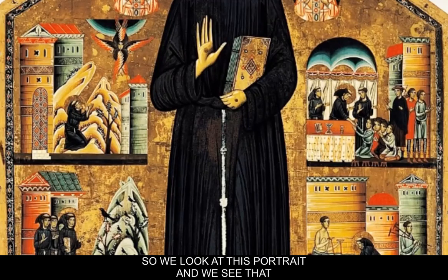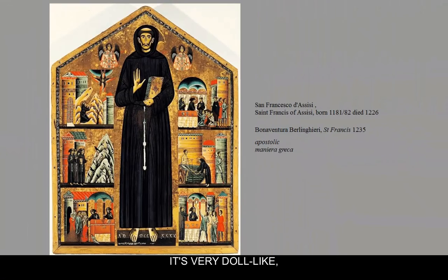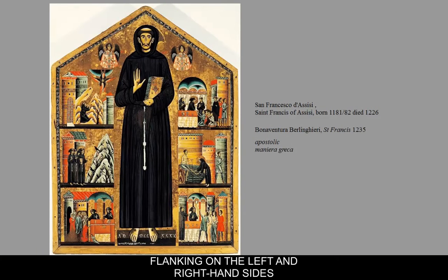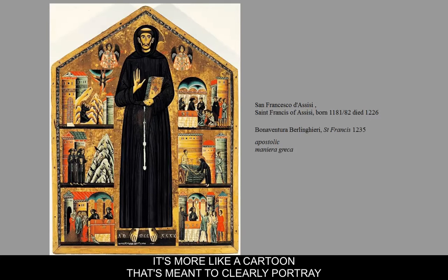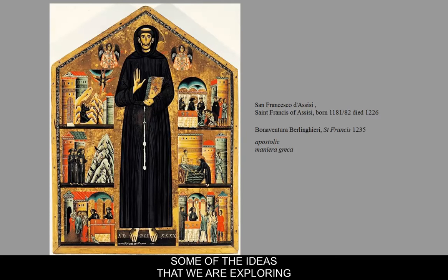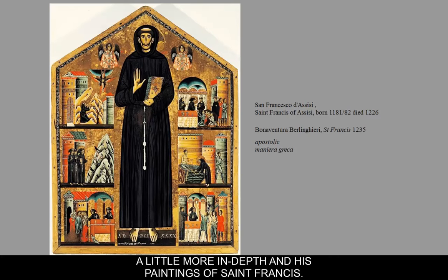Looking at this altarpiece portrait, we can see it's very stiff and doll-like. The figures are unrealistic, and the scenes flanking St. Francis on the left and right are also unrealistic — there's no deep space created. It's more like a cartoon meant to clearly portray ideas about his life. This was painted in 1235, about 70 years before Giotto, who we'll study more in depth in his paintings of St. Francis.